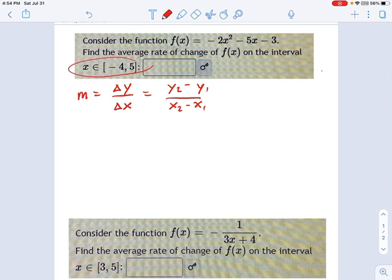Well, if you look at this statement, this math statement here, it says x is a member of the interval going from negative 4 to 5. That means the smallest x is negative 4, the biggest is 5, and it wants to know the average rate of change on that interval, which means x1 equals negative 4, and x2 equals 5.